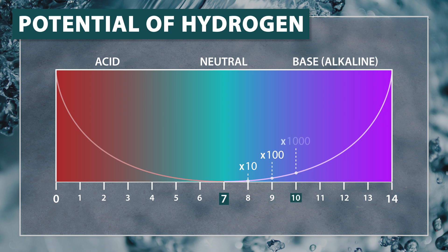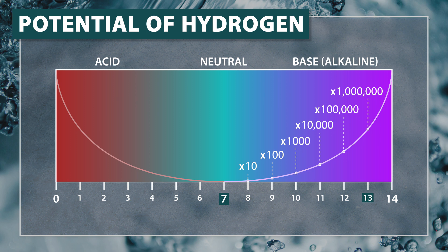As you move up to the stronger alkaline solutions, the difference will add up quickly. A floor stripper with a pH of 13 will be a million times more alkaline than water. The same principles apply to acids as well.